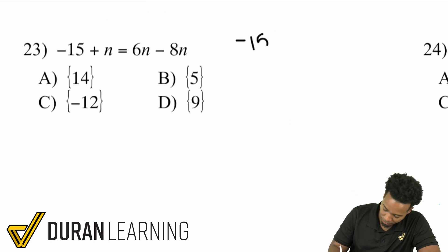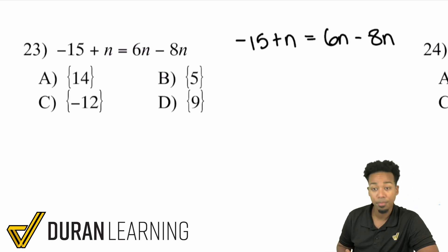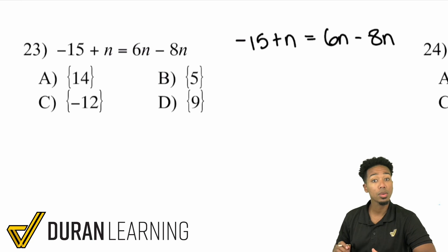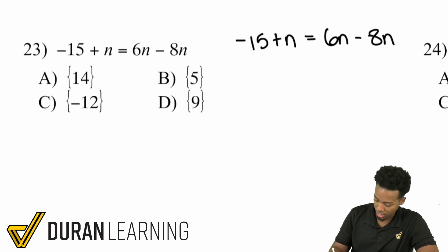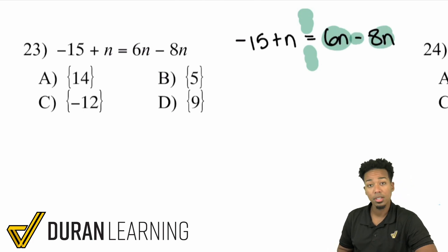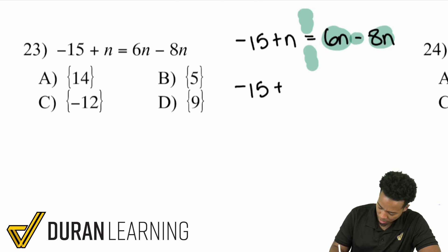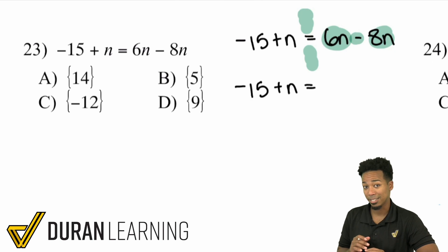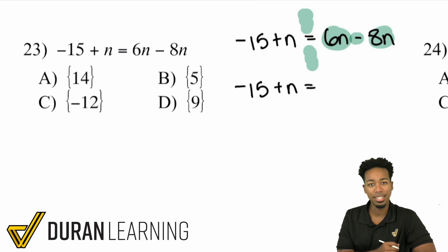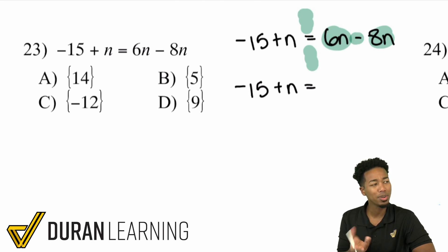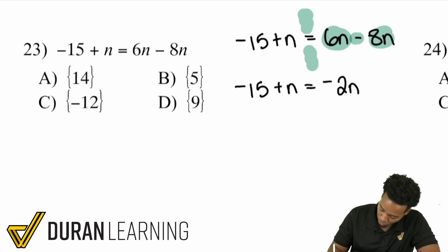We have negative 15 plus n equals 6n minus 8n. Just like the first problem, notice that we can combine some like terms. On the same side of the equal sign, I have 6n minus 8n. Combining like terms: 6 minus 8 — they're like terms, so we can add them. 6n minus 8n, 6 minus 8, that's going to be negative 2 because we're taking away more than we have. So that's going to be negative 2n.